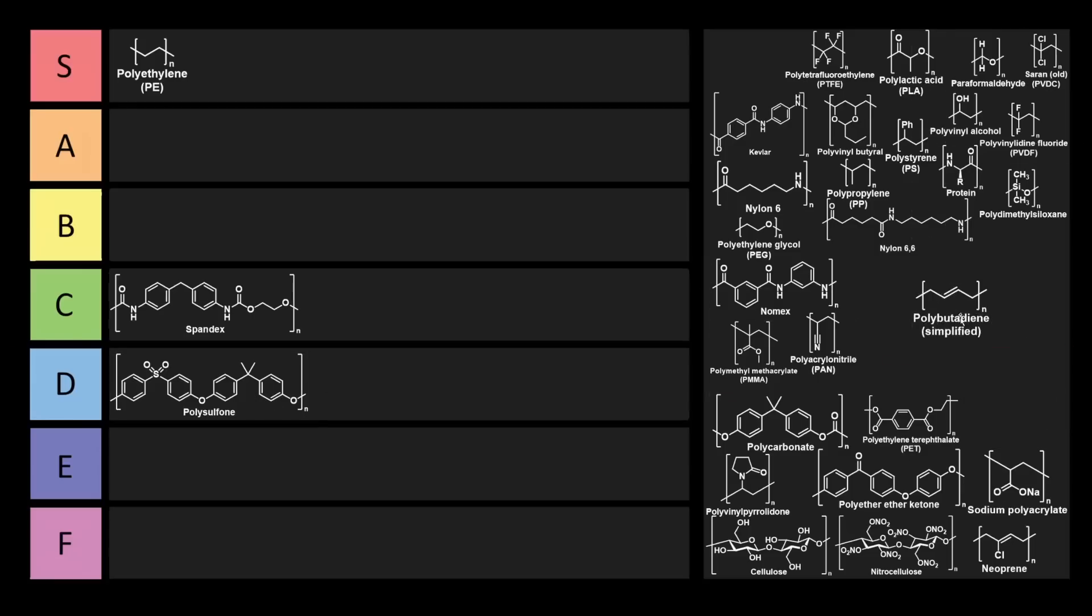So polybutadiene is a polymer. You can see there's this double bond here. The cool thing about polybutadiene is you can take objects made out of it and make them stretchier or more compressive. Rubbers are super useful for a lot of different applications. I think polybutadiene belongs at least in B-tier.